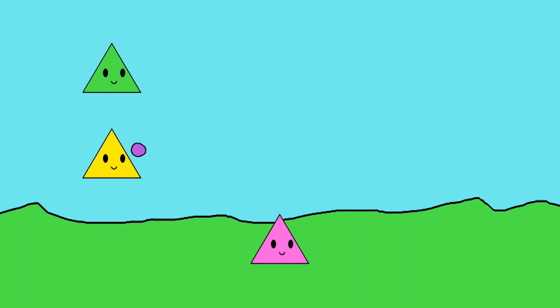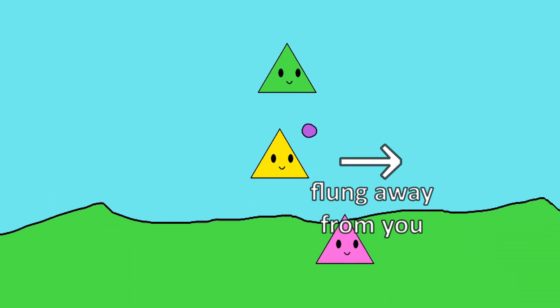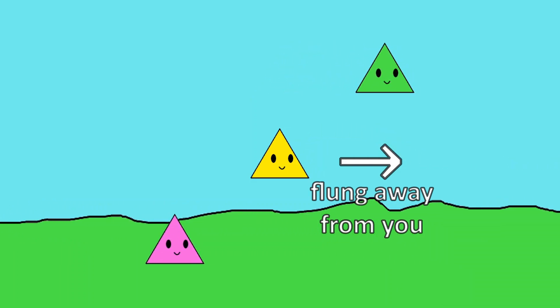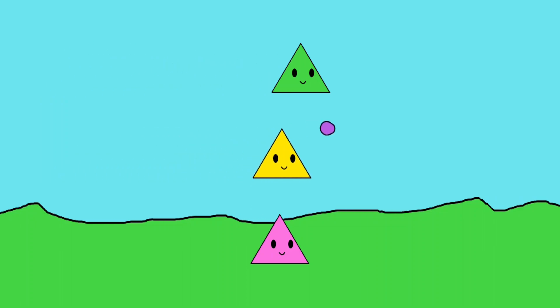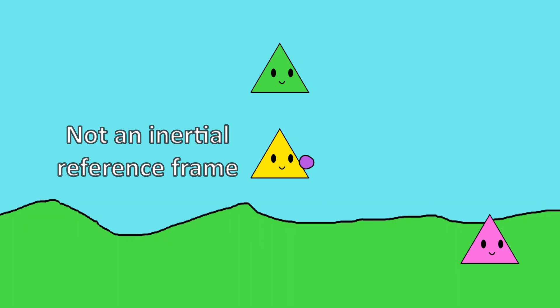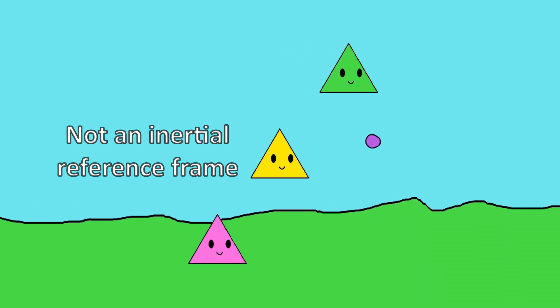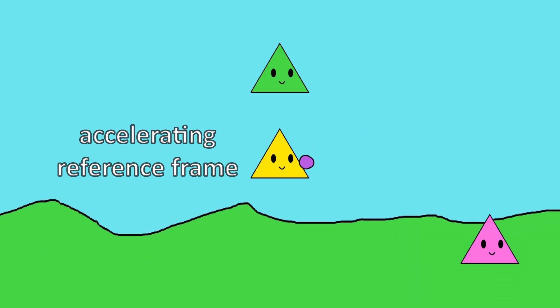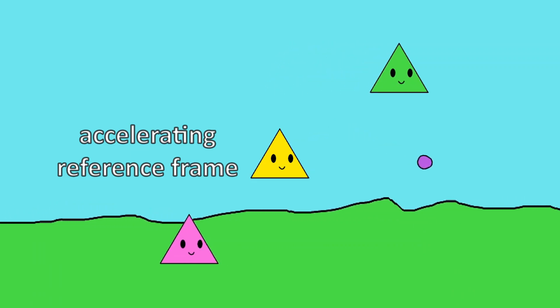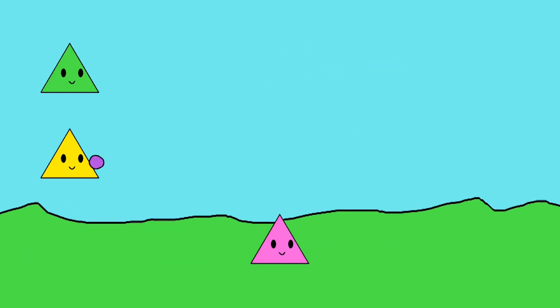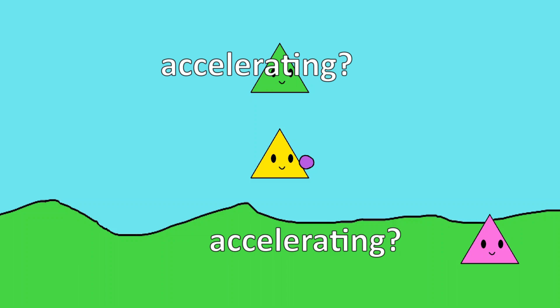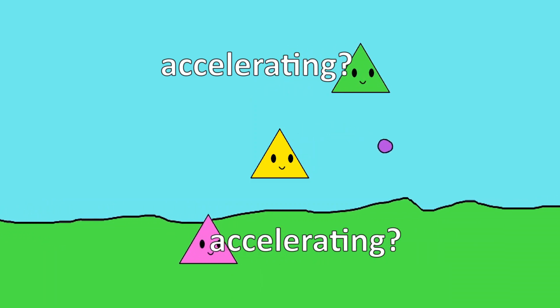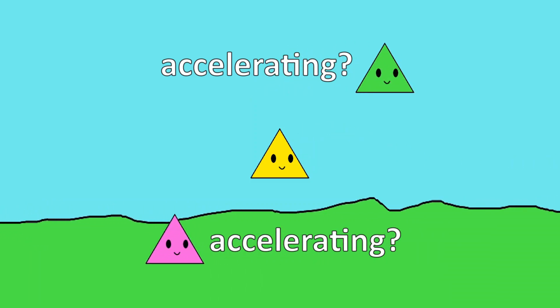Something interesting happens in reference frame C though. In a vehicle that's slowing down, the object will get flung forward. This is different than the other two cases, and that's because this isn't an inertial reference frame. The fact that this reference frame is accelerating makes it fundamentally different than the other two, and so the laws of physics are no longer the same. Now you might be thinking, from this reference frame, it looks like the others are accelerating. So why isn't that the correct interpretation?